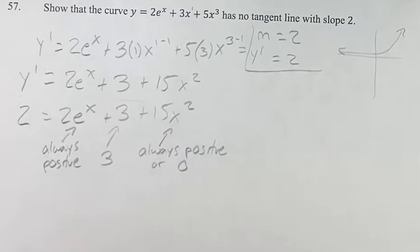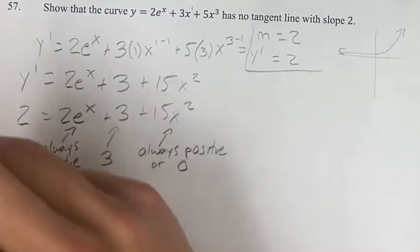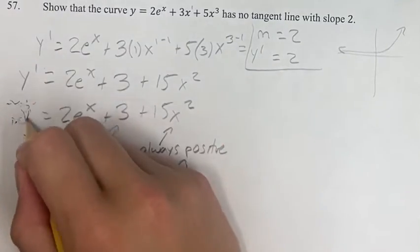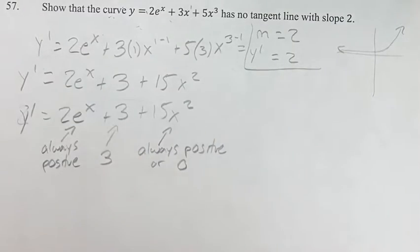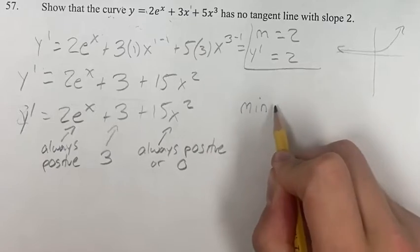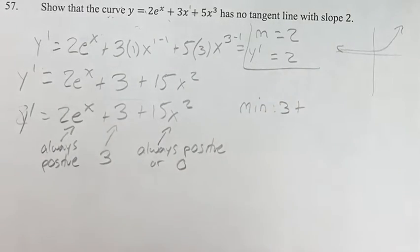So what is the minimum value that the derivative can have? Well, we have to start at 3, right? This term is always 3, so the minimum value is going to be 3 plus the minimum value of this, which is going to be 0.